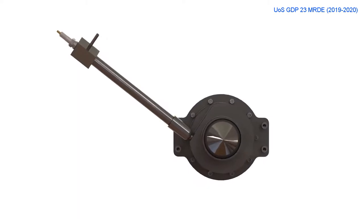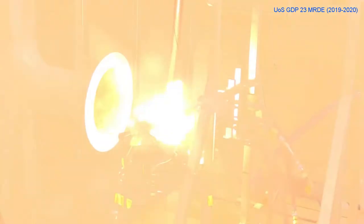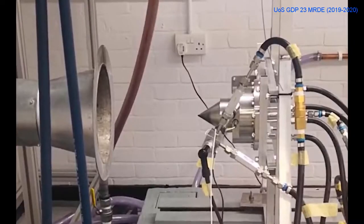Previous GDPs at Southampton have attempted to produce a rotating detonation engine, in which a detonation wave continuously travels around a ring-shaped chamber. The RDE proved successful, but highlighted a need to better understand wave propagation.